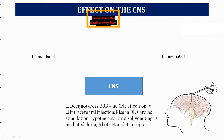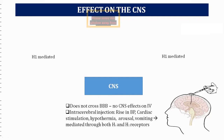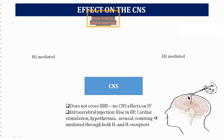For CNS effects: histamine cannot cross the blood-brain barrier easily, so intravenous histamine produces no CNS effects unless the drug has high lipid solubility. To study CNS effects, intracerebral injection is used — a technique involving injection directly through the cranium — which produces rise in BP and cardiac stimulation.